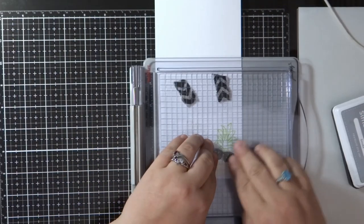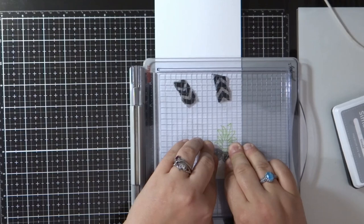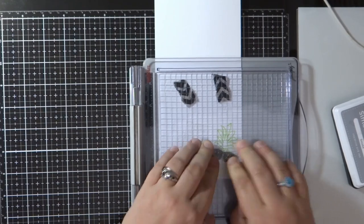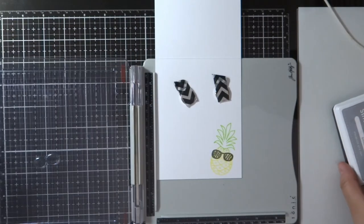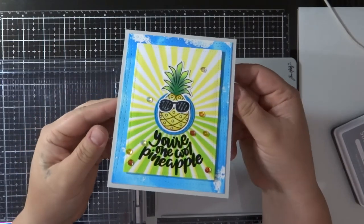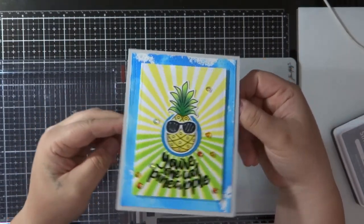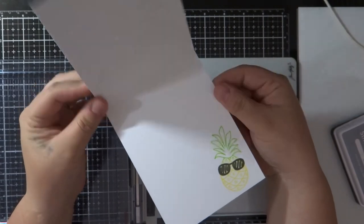And then I'm going to stamp the sunglasses on this pineapple also using smoke gray Simon Says Stamp ink. That's kind of my go-to ink for insides of cards because it's bold, but it's not too bold. And there you have it. The inside of the card, keeping it simple and that outside with all that radiating rays. I love it.